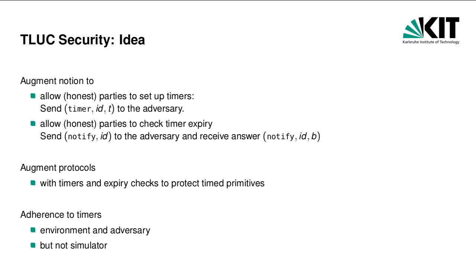With UC security, protocol parties are not aware of the computation steps performed by other entities. As a consequence, honest parties cannot use timed commitments, because they do not know when the security expires. With TLAC security, we propose a variant of UC security suitable for timed primitives like timed commitment schemes. In TLAC, honest parties can set up timers by sending a message 'timer' together with an ID and a timeout value, denoting after how many computation steps the timer expires. To check for the expiry of a timer, protocol parties can send a message 'notify' together with the timer ID. In the reply, a bit B indicates if the timer has expired. Depending on this answer, parties can, for example, abort a protocol execution because their security guarantee is no longer met.